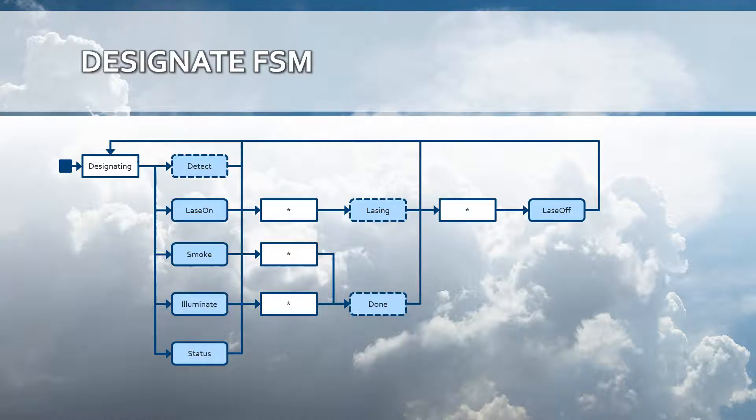The Designate class detects targets at a defined interval, and once targets have been detected, these targets can be lased, smoked, or illuminated. The lasing, smoking, and illumination will be controlled by reconnaissance vehicles which are around the targets and executing the detection.